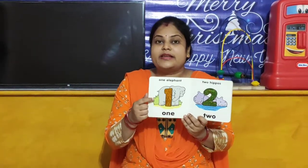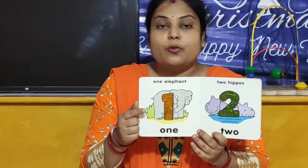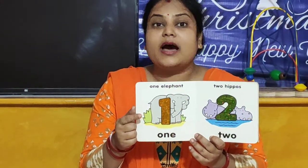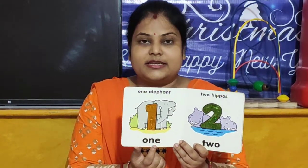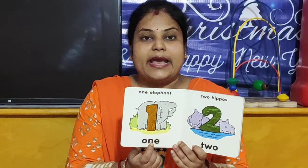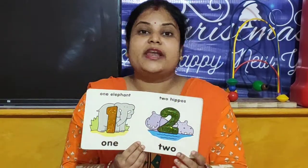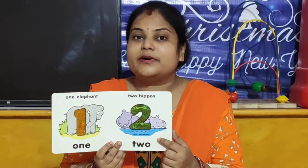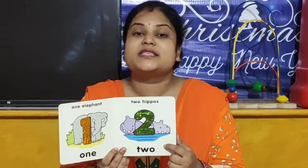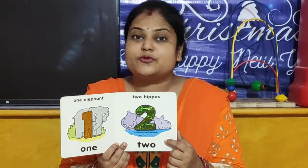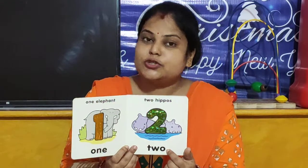Look children, which number is this? This is number 1. And what is the spelling of 1? It is written here: O-N-E. Then children, after 1, which number comes? After 1, number 2 comes. And what is the spelling of 2? T-W-O.